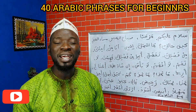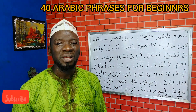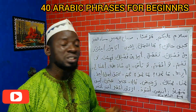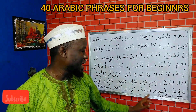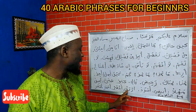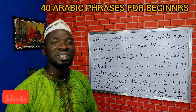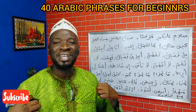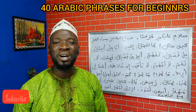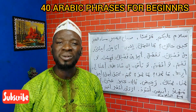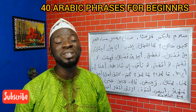Now the colors: abiyad means white. Aswad means black. Azraq means blue. Akhbar means green — haza allibas akhbar, this cloth is green. Ahmar means red. Asfar means yellow.